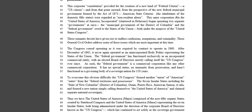The same corporation doing business as the United States of America, Incorporated, chartered in Delaware, began operating two separate governments at once — the municipal government of the District of Columbia and the federal government owed to the states of the Union, both under the auspices of the United States Congress. These semantic deceits — they used the same words with capital letters and common letters and confused the hell out of all of us — have given rise to endless confusions, usurpations, and criminality. These general civil orders address some of these issues, which are most important at this time.